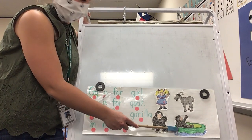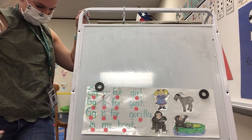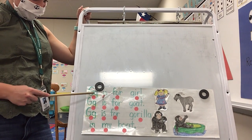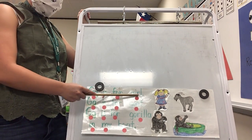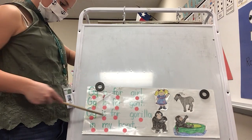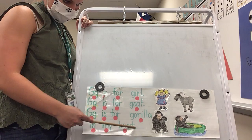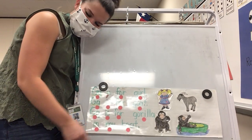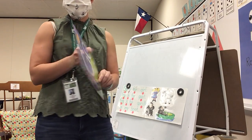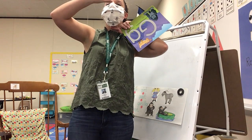All right, let's read it one more time — can you help me read? Here we go. G is for g, g, girl. G is for g, g, goat. G is for g, g, gorilla in my boat. What? Oh, my goodness, what a silly, silly poem! All right, my friends, one more time: this is the letter G. What letter? G. And G says g, g, g.